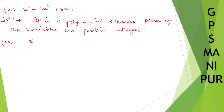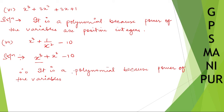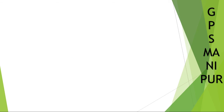Roman number seven, which is our last question: x cubed plus 1 by x to the power minus 2 minus 10. You may say this is not a polynomial, but look very carefully — 1 divided by x to the minus 2 becomes x squared. So it is x cubed plus x squared minus 10, and it is a polynomial because the power of the variables are positive integers. Thank you so much, we will meet in the next video.